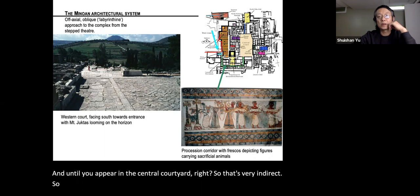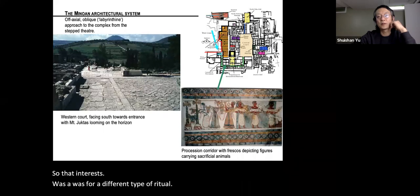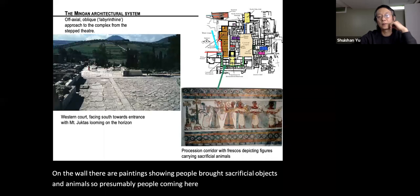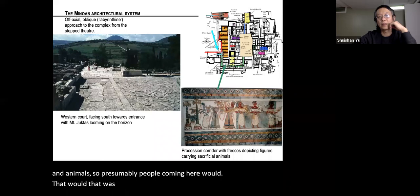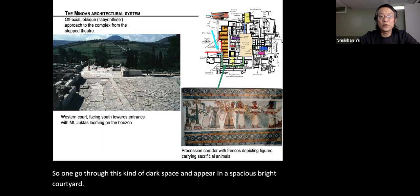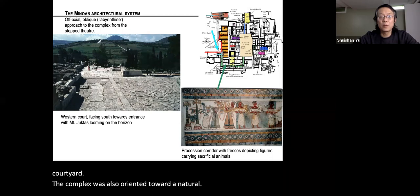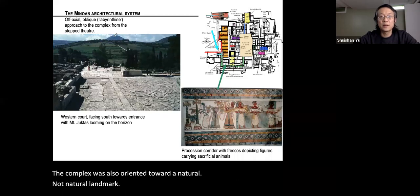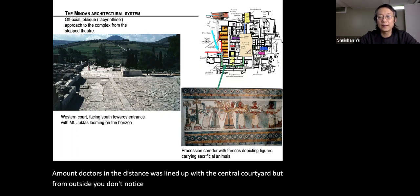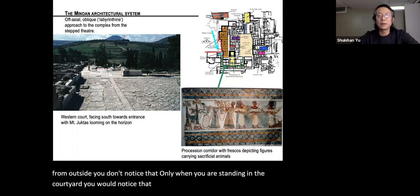The entrance passageway was used for ritual service and performance. Wall paintings show people bringing sacrificial objects and animals. One moves through a dark space and appears in a spacious, bright courtyard. The complex was also oriented toward a natural landmark: Mount Jactas in the distance was aligned with the central courtyard, but this is only visible once you are standing inside the courtyard — from outside, you wouldn't notice it.